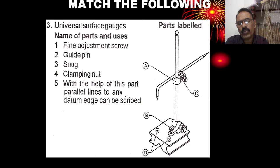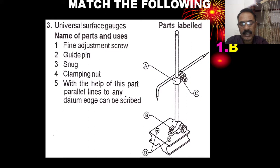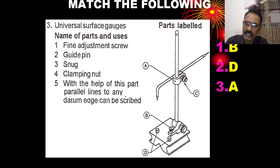Number one — fine adjustments. B is the fine adjustment. The guide pin and the snug and clamp are also identified. With the help of the fine adjustment screw, parallel lines to any datum can be scribed.